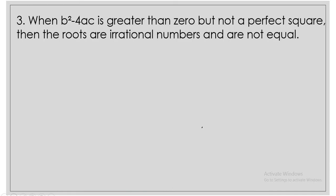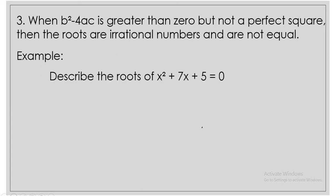Now, when b squared minus 4ac is greater than 0 but not a perfect square, then the roots are irrational numbers and are not equal. Example: describe the roots of x squared plus 7x plus 5 is equal to 0.